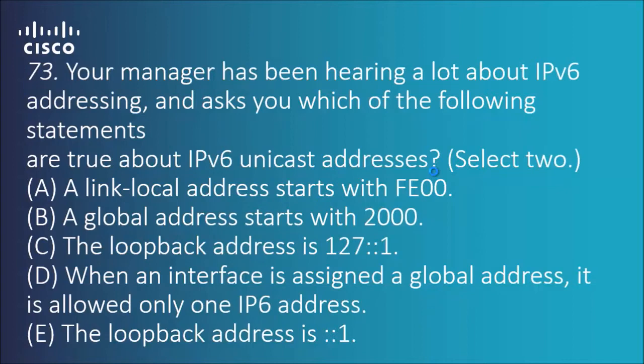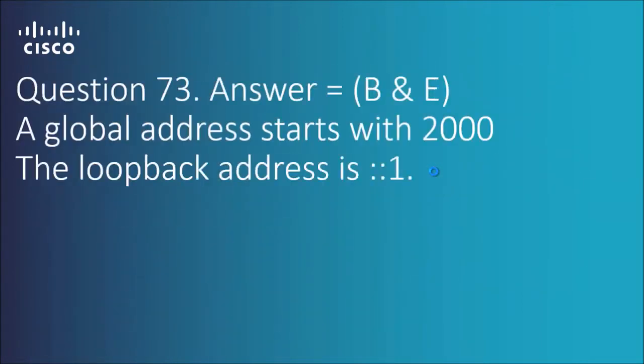Question 73: your manager has been hearing a lot about IPv6 addressing and asks which of the following statements are true about IPv6 unicast addresses — select two. A lot of these questions seem to be more about memory than deep technical knowledge. The answers are B and E. The loopback address is the double colon and one as explained earlier, and the global address simply starts with 2000.